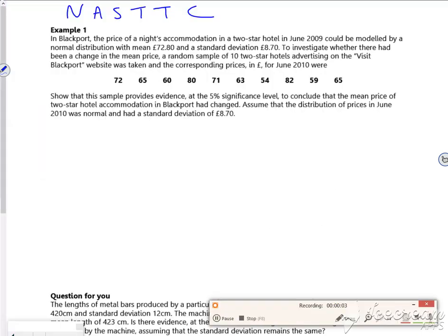Let's have a look at this one. In Blackport, the price of a night's accommodation at a two-star hotel could be modeled with a normal distribution with a mean of £72.80 and a standard deviation of £8.70. So X follows a normal distribution N(72.8, 8.70²). Remember it's a variance in there.